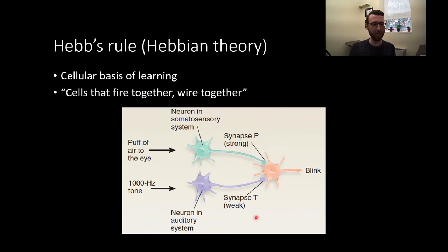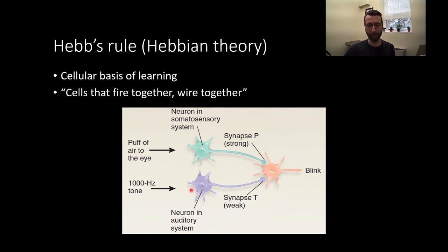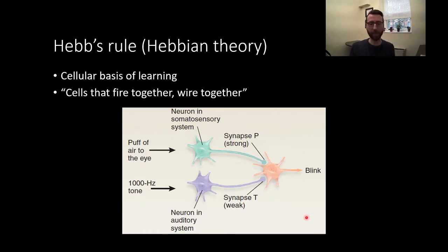This isn't really a cognitive thing. When you hear a tone, you don't think about it and say 'tone means puff, I'm going to shut my eye now.' You almost reflexively, very quickly close your eye. That's what we need to have happen — we need this synapse to be strengthened so that the tone drives the auditory system neuron in such a way that it will cause the motor neuron to blink. We'll talk about the process of long-term potentiation — the changes that allow that learning to stay around for a while.